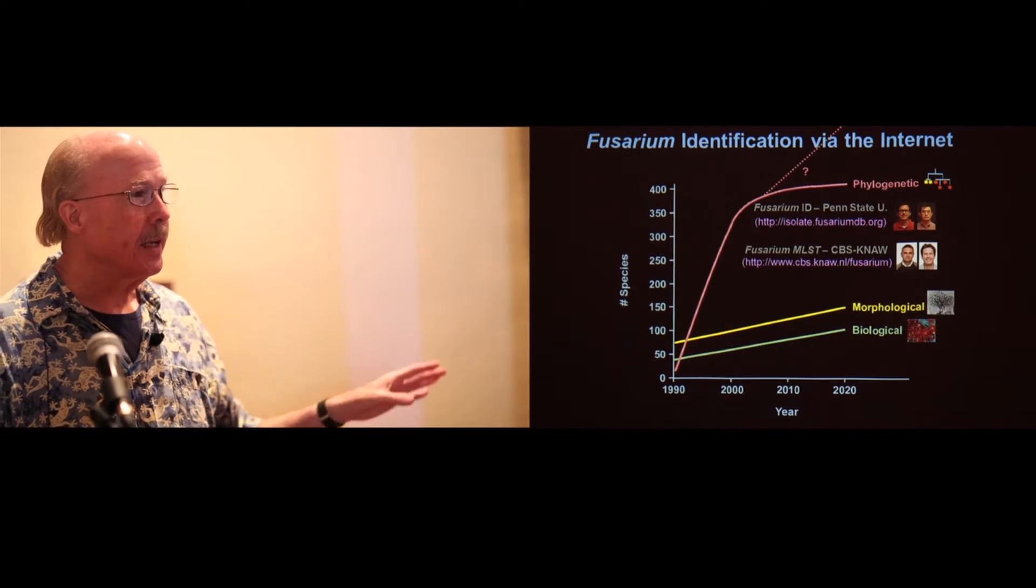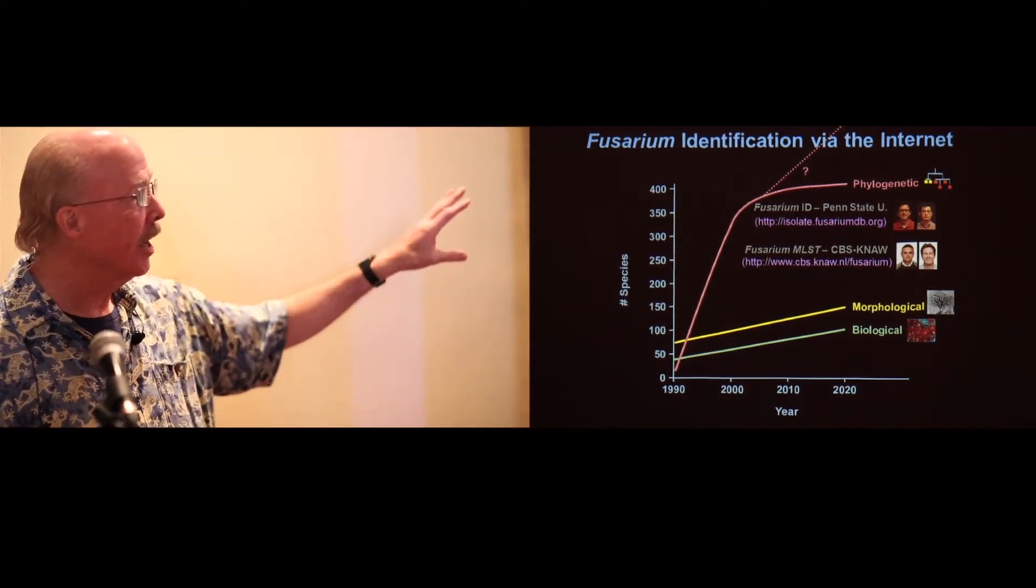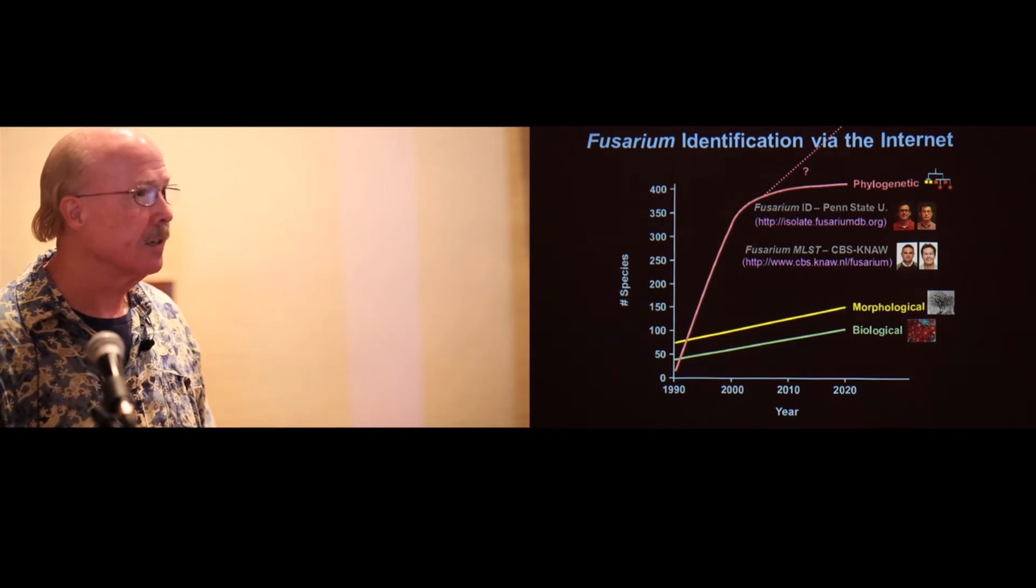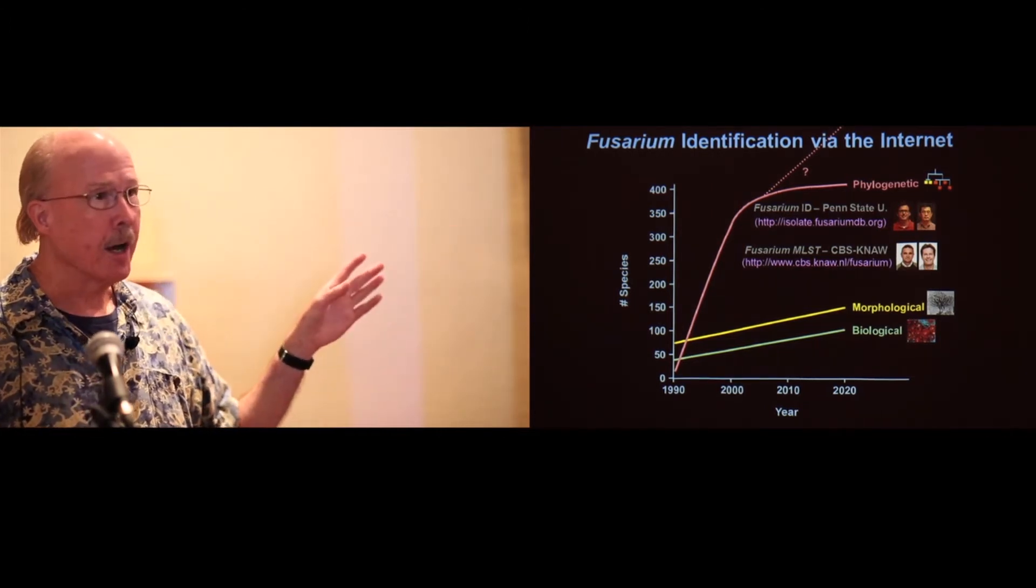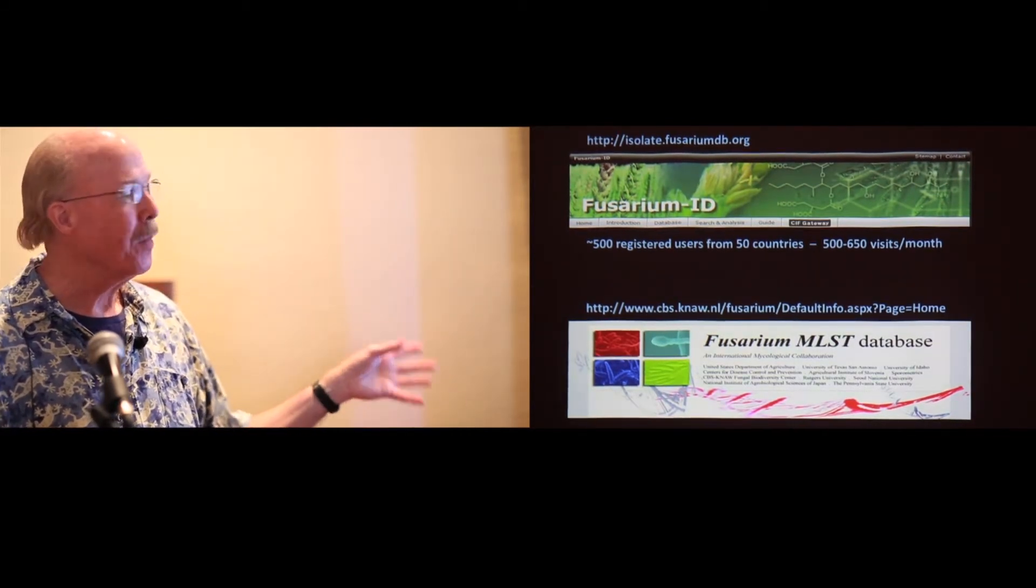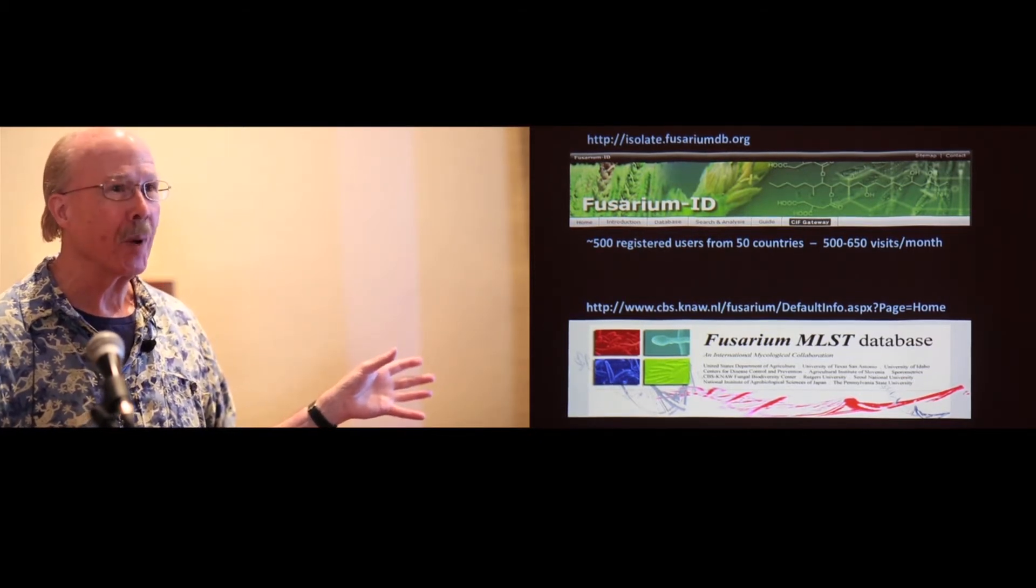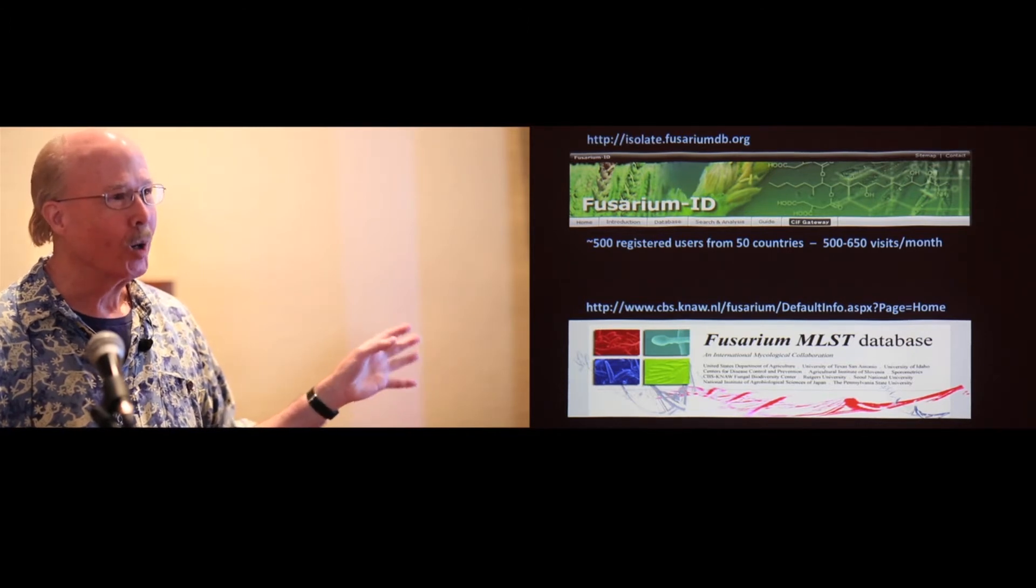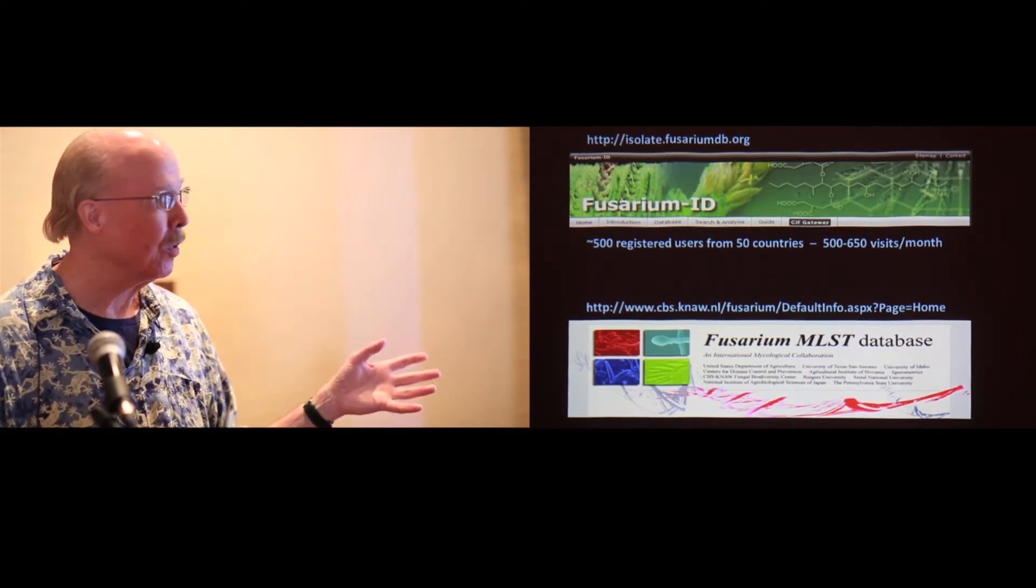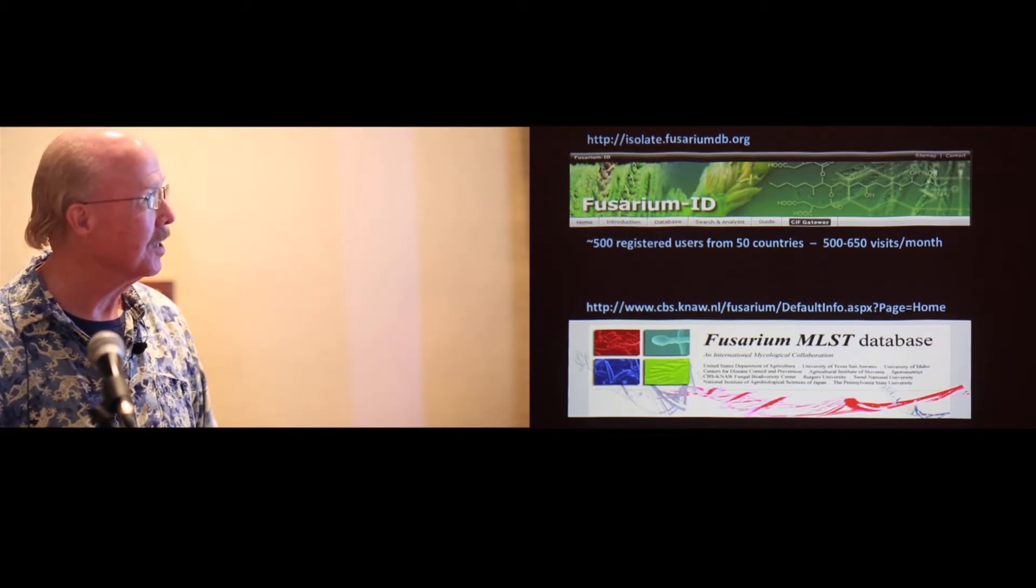So I wanted to point out that for those of you who are trying to identify fusaria, if you don't know already, there are two websites, one set up by Dave Geiser, the other one by my colleagues at the CBS Culture Collection in the Netherlands, where you can not only go in and do blast searches, download sequences, make trees. But unlike GenBank, in two important respects, the sequences are curated a lot better, so you just can't dump anything in and call everything solani, just for example. And more importantly, you can get the isolates and extend the results of the studies.